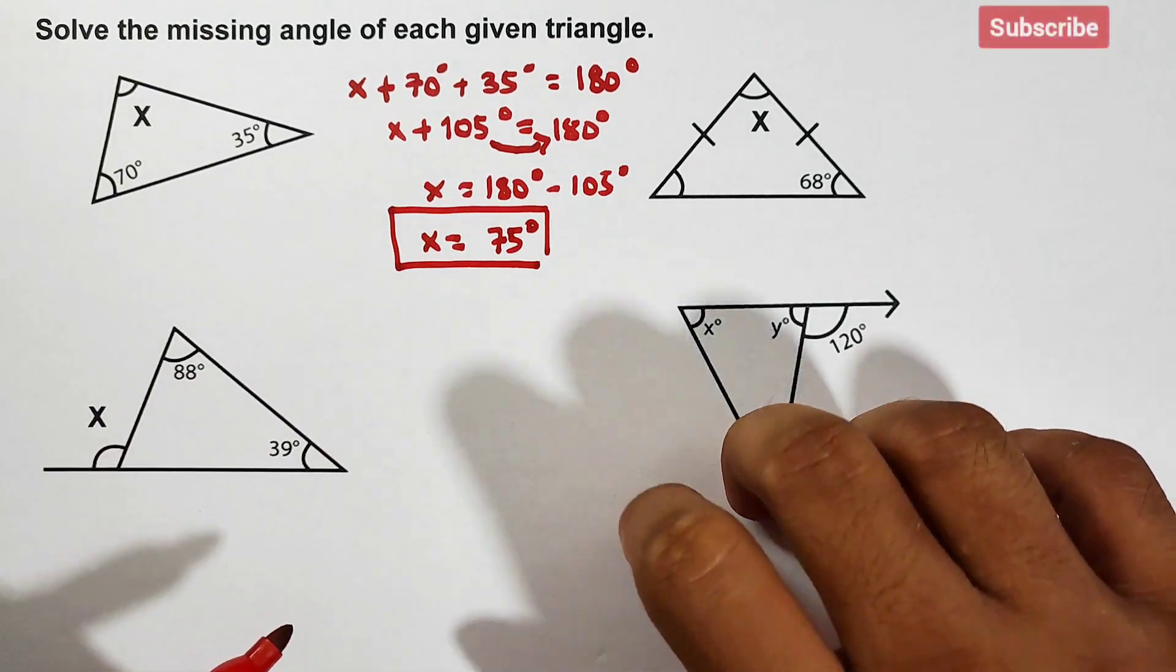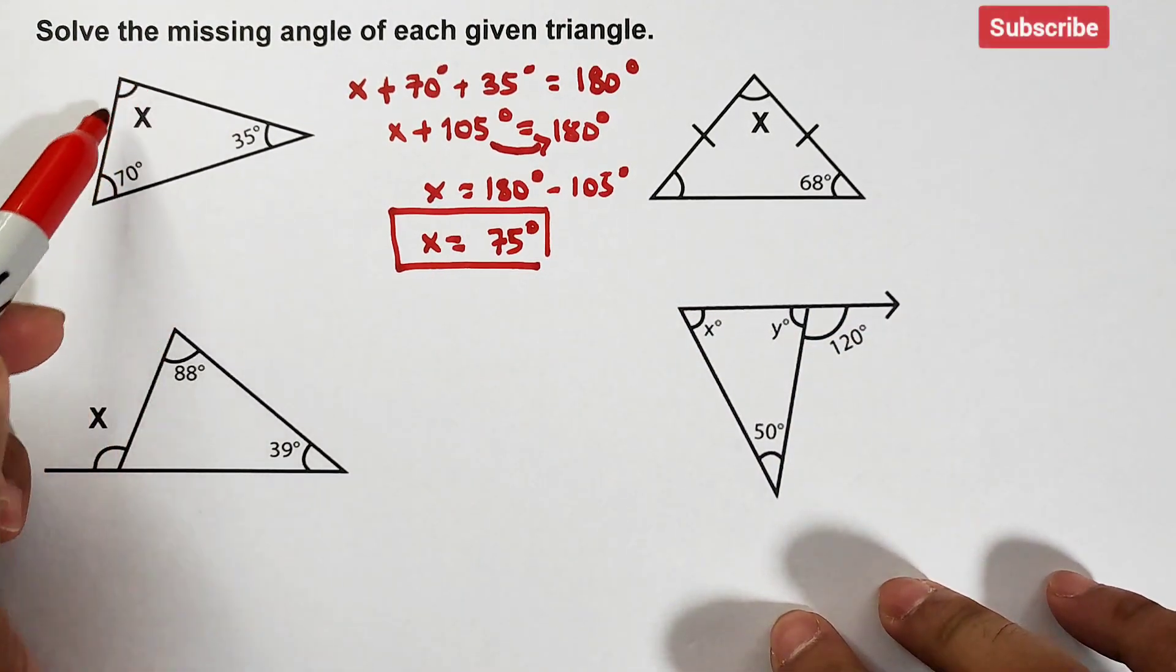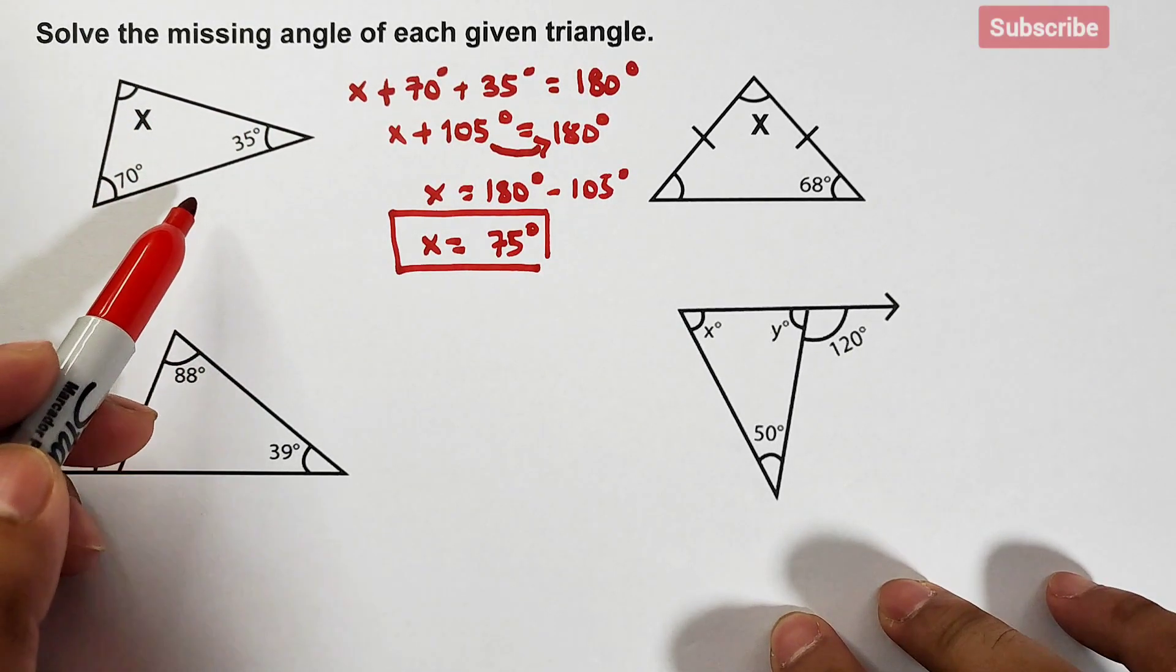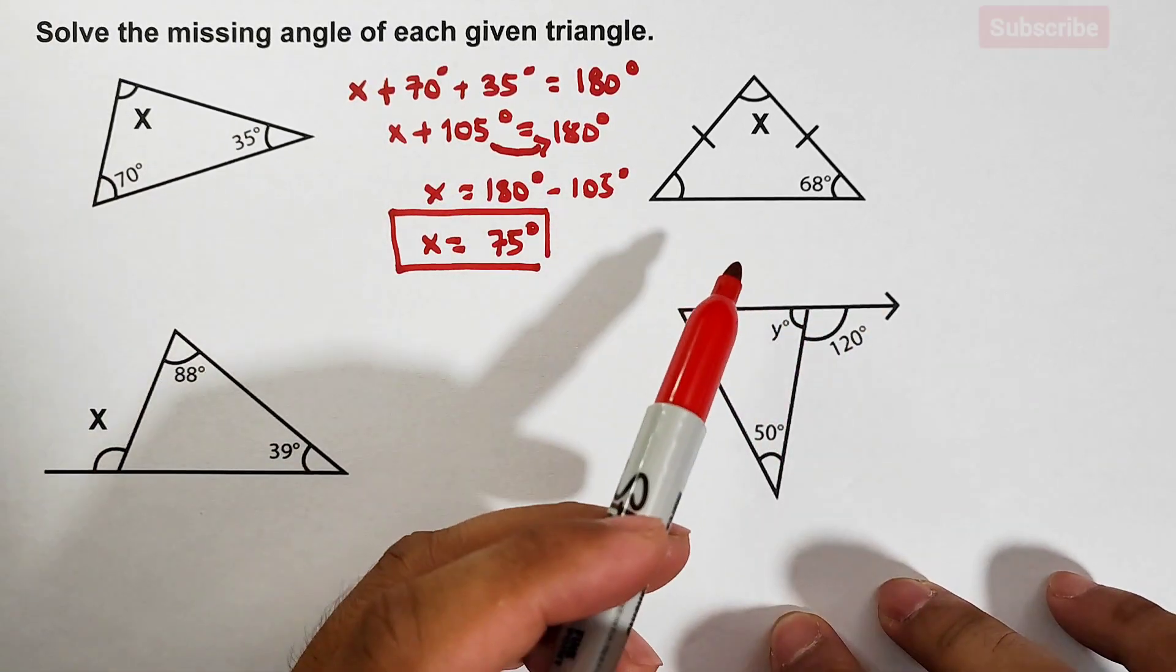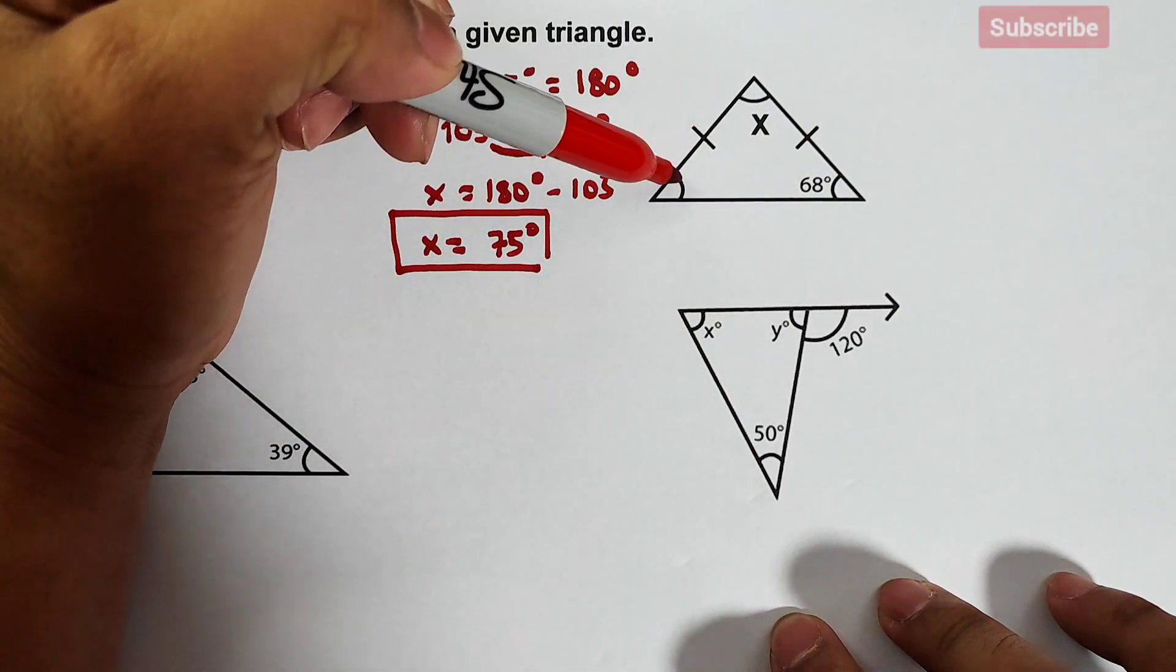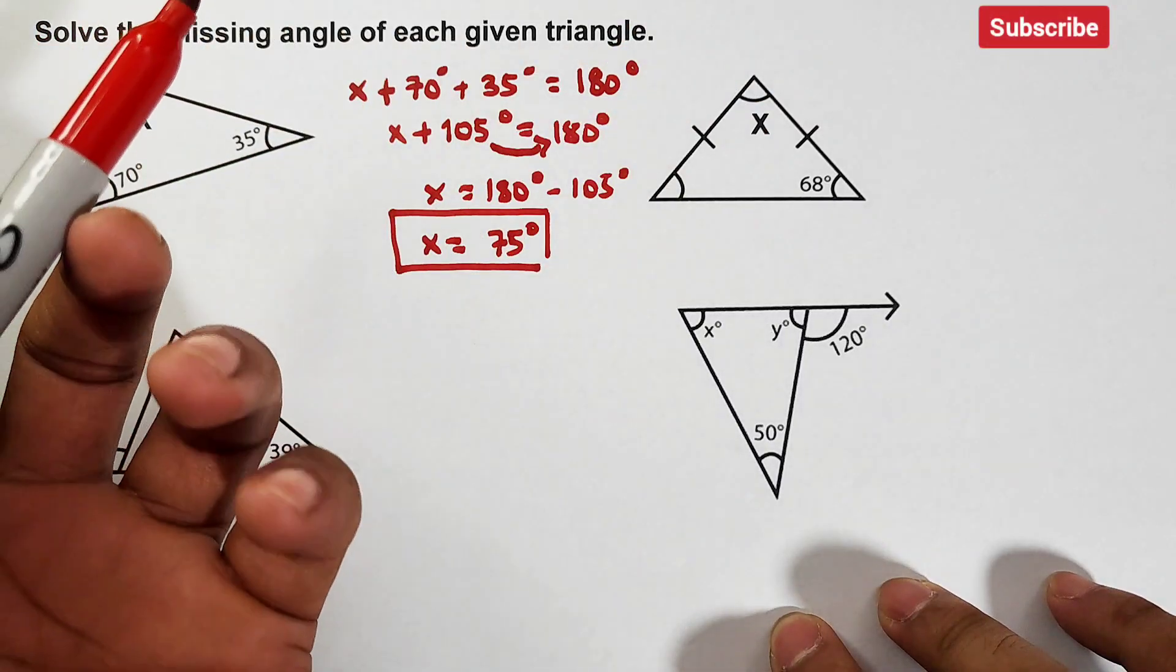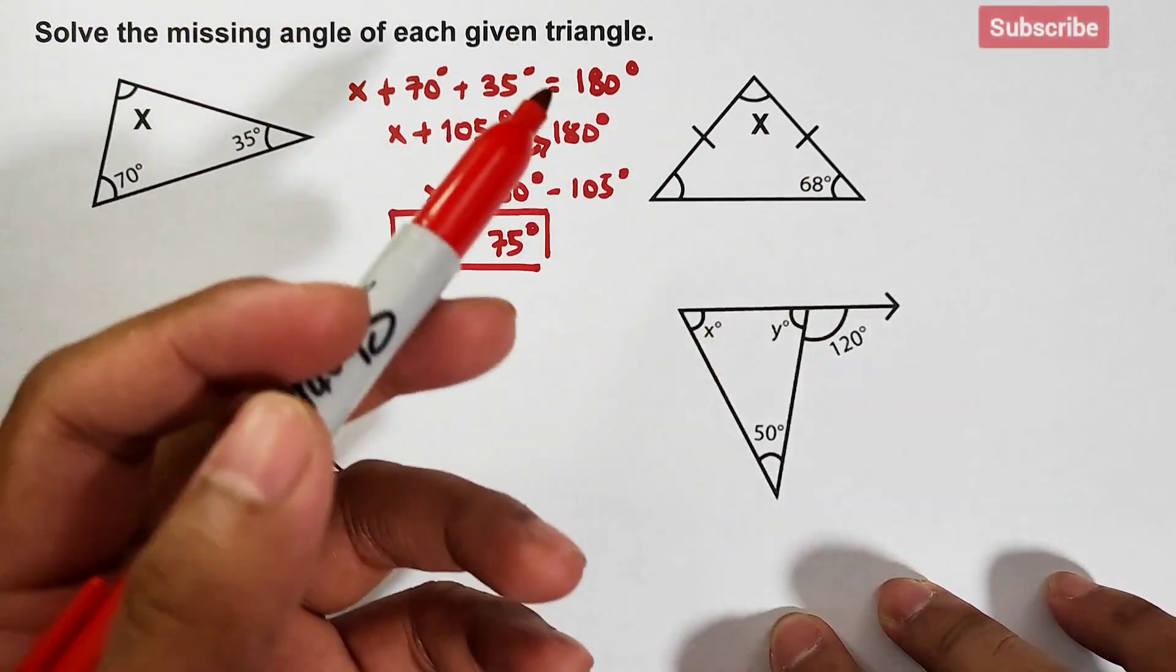Now let's continue with triangle number two. In triangle number two we can also apply the concept that we use in example number one, but as you can see there are two missing angles, but one of them is easy to get. Okay, as you can see we have two markings that this side is congruent to this side, meaning this side has the same length as this one. If we apply the concept about isosceles triangle, because this one is isosceles triangle...